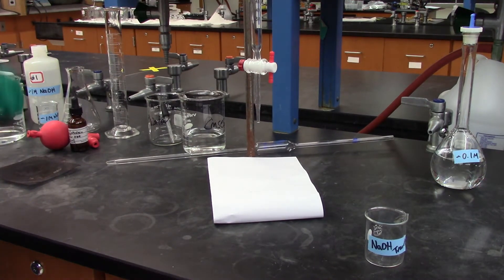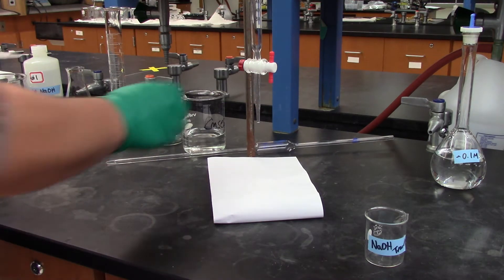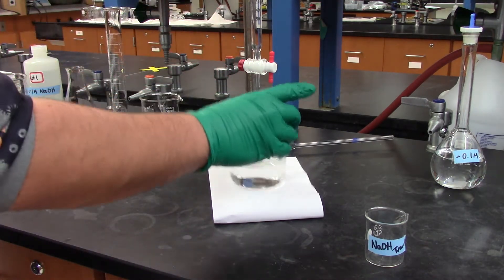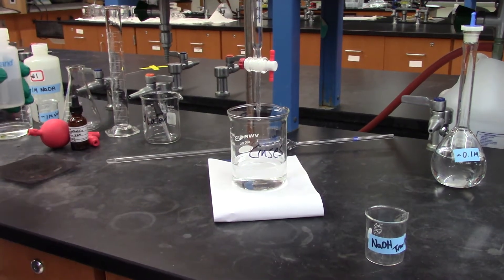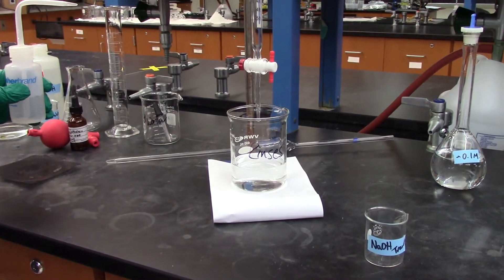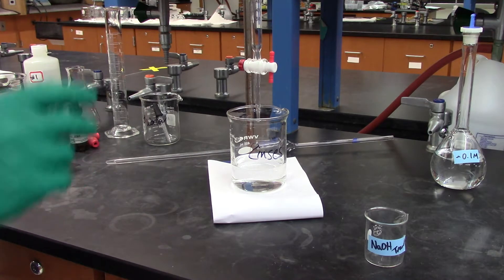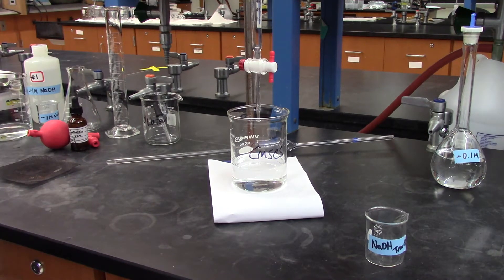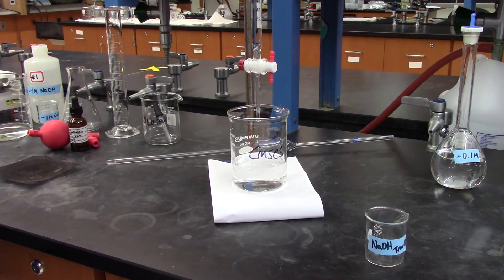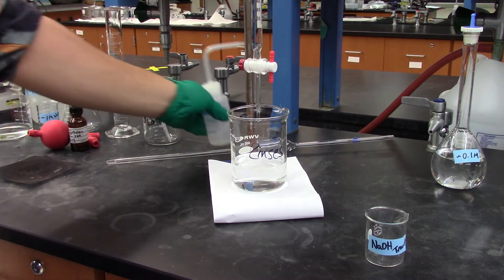So the first thing you're going to want to do is rinse your burette, put some distilled water. The stopcock is parallel to the burette length, so that's going to allow your water to pass through. We'll allow our water to go through there.